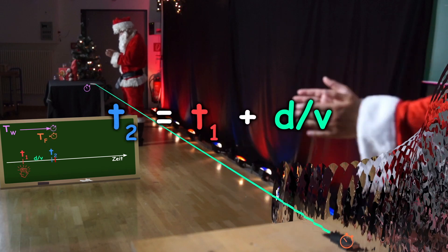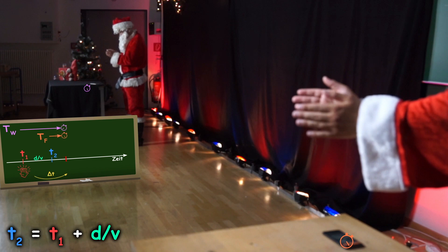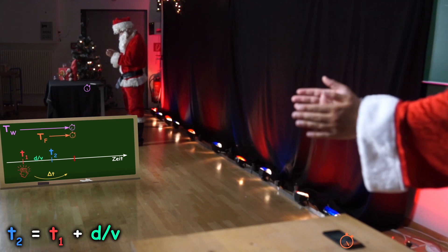The friend claps his hands later at the time interval delta T. Thus his stopwatch stops immediately at time T3 equals delta T.